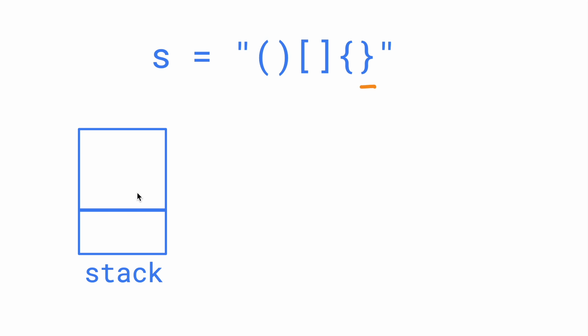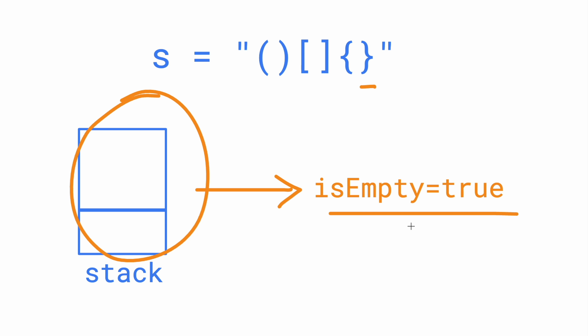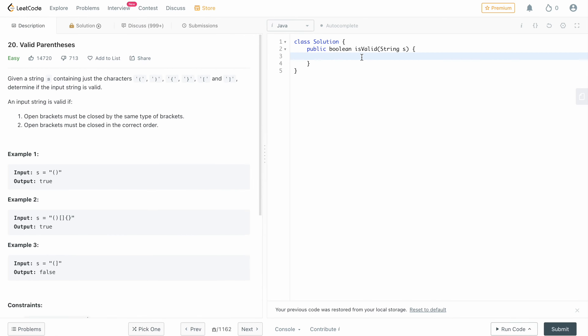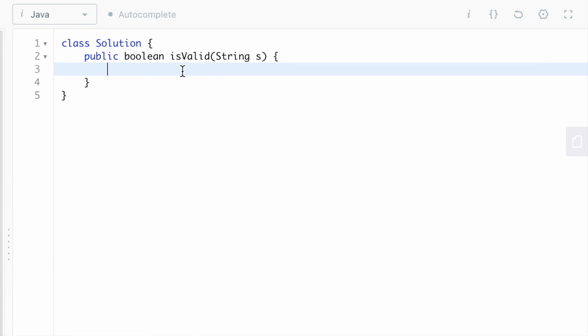The next character is a closing middle bracket — we check the stack, which has middle opening, so we pop it. Now our string is finished. We check our stack: if we get an empty stack, we return true. If there are any elements remaining in the stack, we return false, because that means some opening bracket had no corresponding closing. Also, as a first check, if the string length is not even, we return false immediately, since every opening needs a closing.